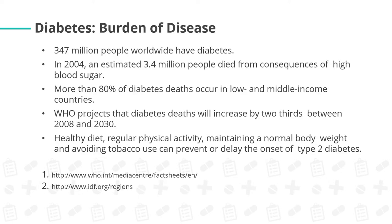Burden of diabetes: 347 million people worldwide have diabetes. In 2004, an estimated 3.4 million people died from consequences of high blood sugar. More than 80% of diabetes deaths occur in low- and middle-income countries. WHO projects that diabetes deaths will increase by two-thirds between 2008 and 2030. Healthy diet, regular physical activity, maintaining a normal body weight, and avoiding tobacco use can prevent or delay the onset of type 2 diabetes.